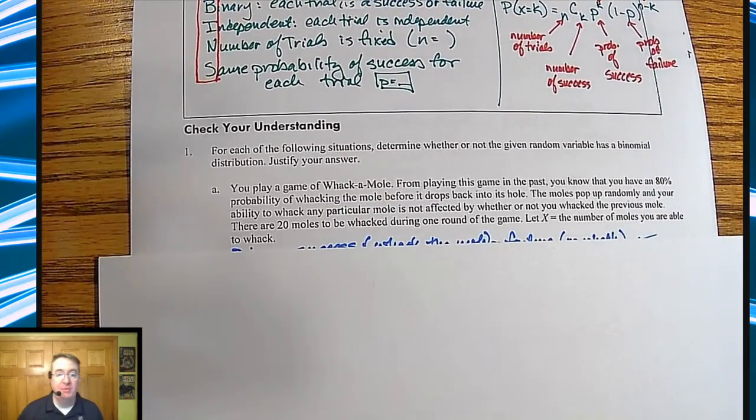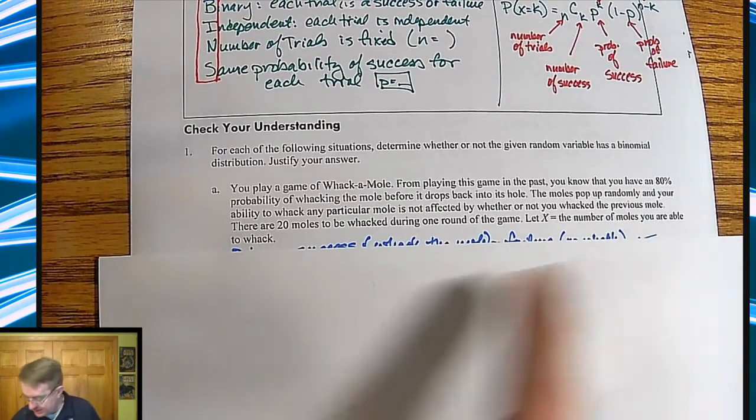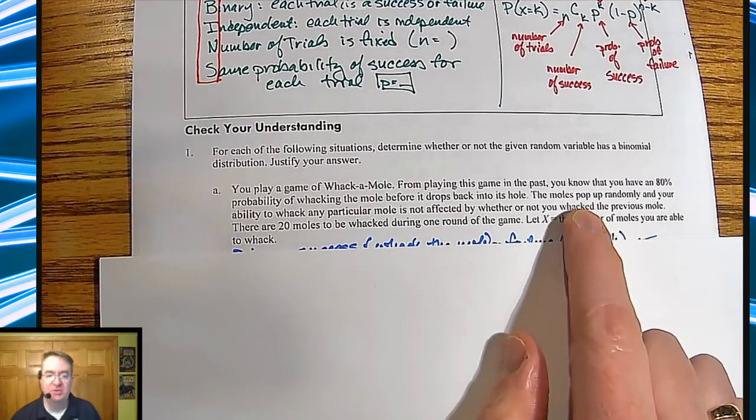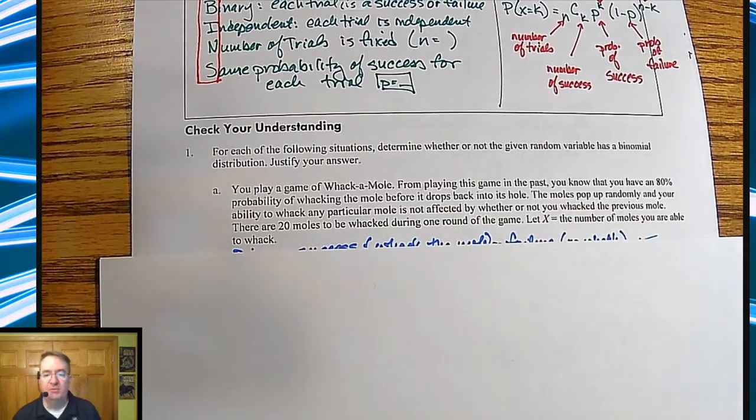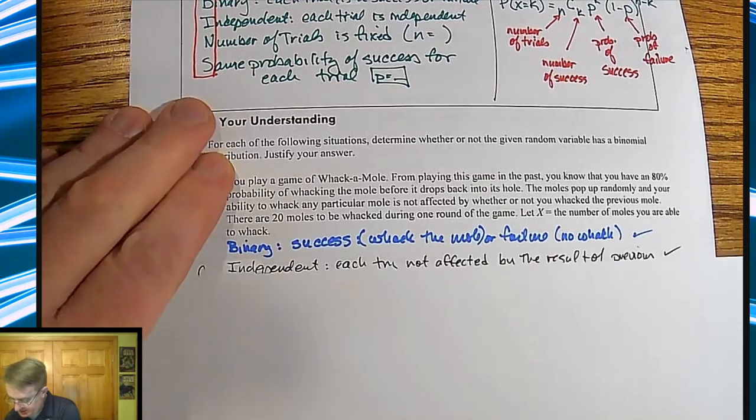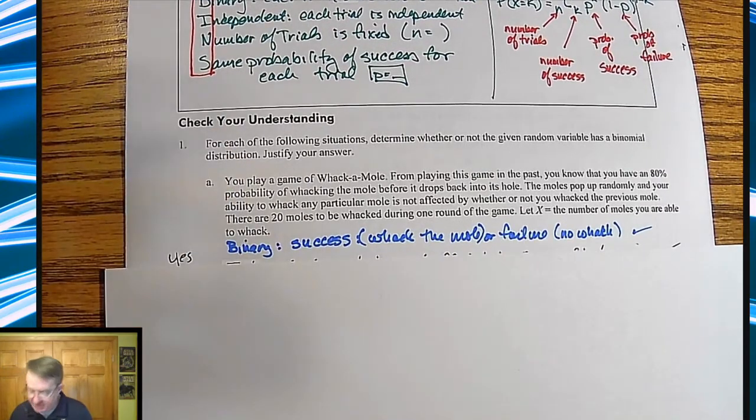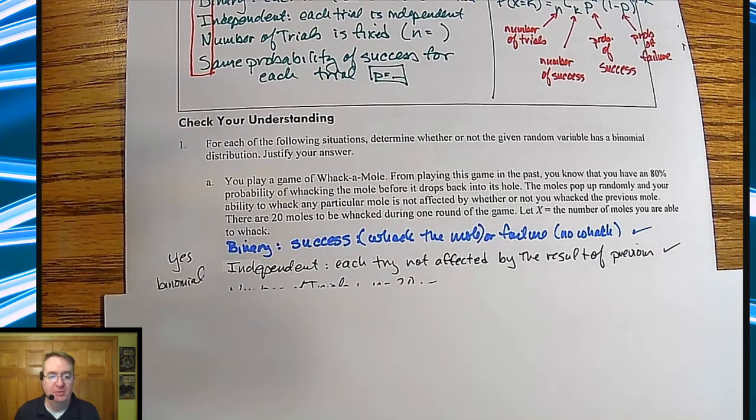All right. First problem, you're playing whack-a-mole. You know that you have an 80% chance of whacking the mole before it drops back in. The moles pop up randomly. Your ability to whack the mole is not affected by whether or not you whacked the previous one. There are 20 moles to be whacked during one round. The question is, X is the number of moles that you're going to whack. In this case, binary is you only have two options. There's a success and there's a failure. You either whack them all or you don't.